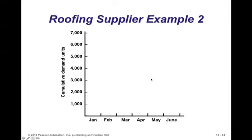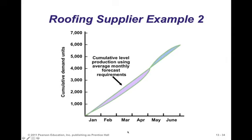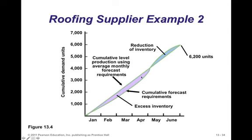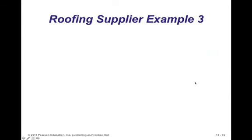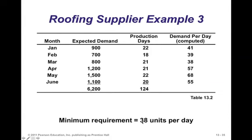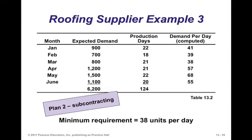If we draw the cumulative production and cumulative demand, we can see how the two stack up: there's a space representing excess inventory in early periods, then the inventory is reduced down toward zero as cumulative production becomes equal to cumulative demand. For plan two, we want to use subcontracting. We determine the minimum production level to keep internally, and anything over and above that we subcontract. We calculated our daily demand and the lowest level was 38 units per day.